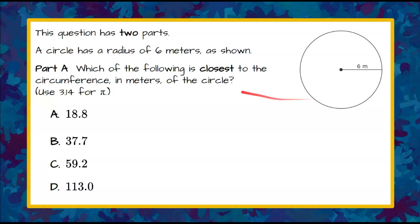Here's our question today. This question has two parts. A circle has a radius of 6 meters as shown. Part A, which of the following is closest to the circumference in meters of the circle? And use 3.14 for π.